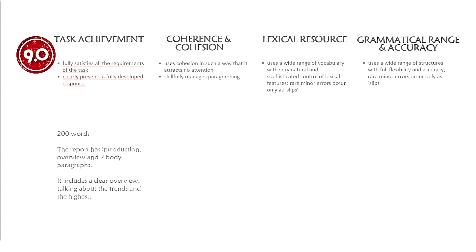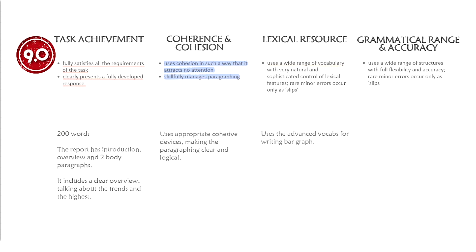Now let's check its band descriptors. Initially, it has 200 words — writing 155 to 200 words is acceptable as long as you follow the band descriptors according to your target score. The example satisfies all the requirements of the task because it has an introduction, overview — which includes the main data trends and the highest — and body paragraphs. Additionally, the report is logical and easy to follow because it uses appropriate cohesive devices. Moreover, the words used are advanced and used accurately. Lastly, all the sentences are various types of complex sentence structures. If you want to get 9.0 and learn about complex sentence patterns for IELTS writing task 1, please check the link below.